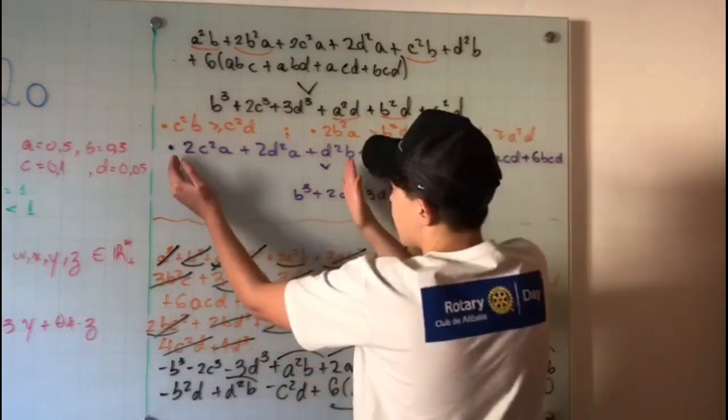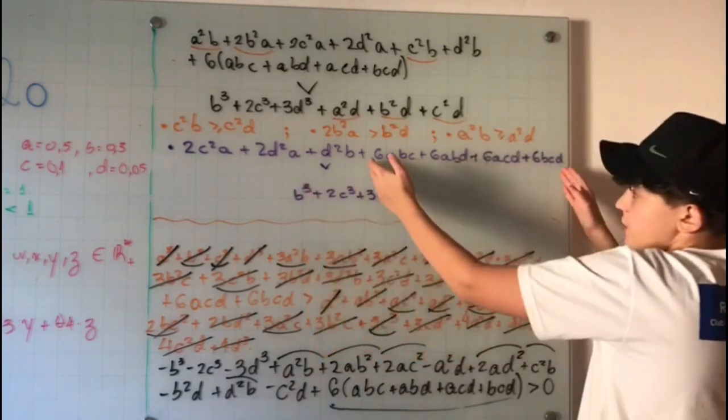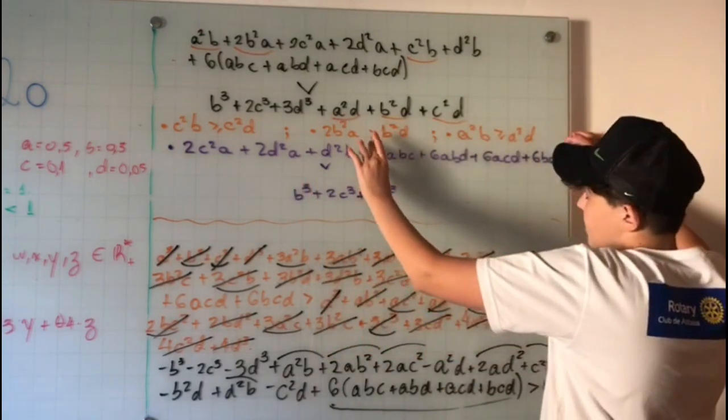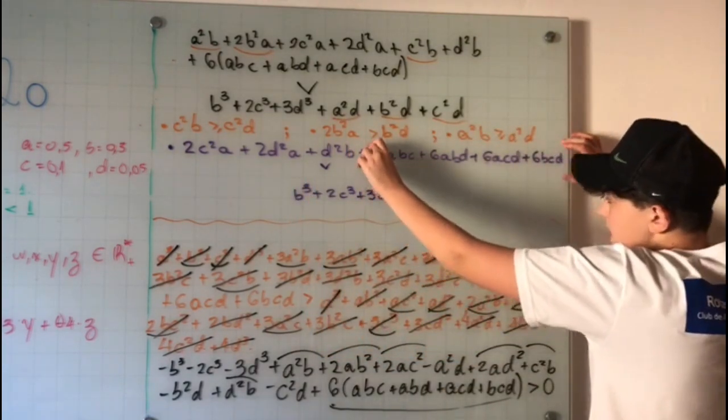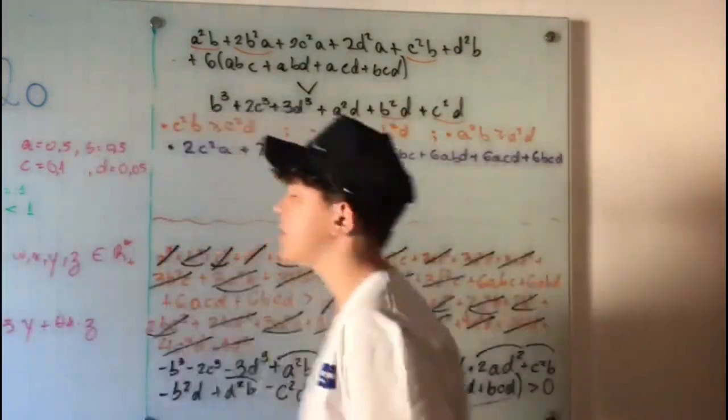You see that you get this inequality. Proving that this part, actually this sum, is bigger than this one, you'll get that. You just have to prove that this part is bigger than zero.